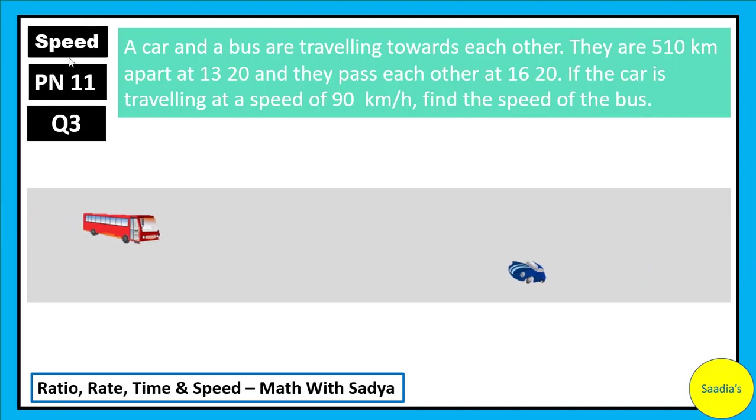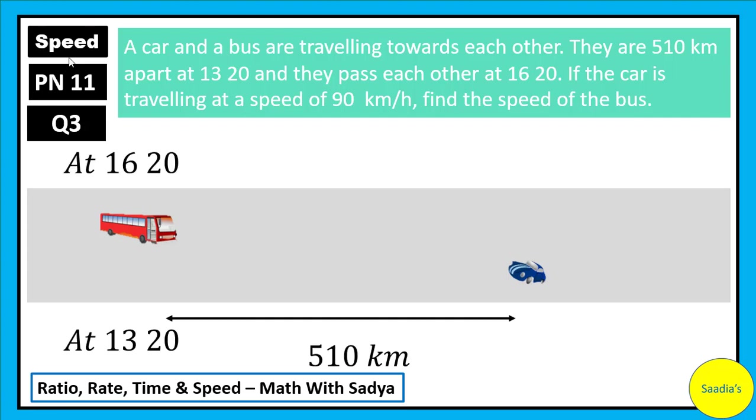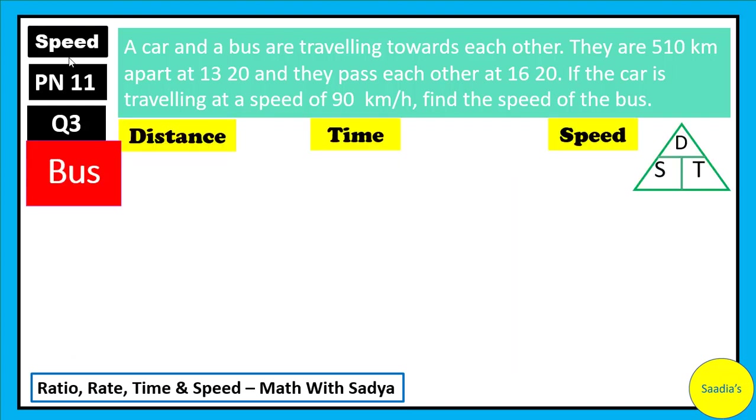The bus and the car are travelling towards each other. At 1320, they are 510 km apart. And at 1620, the car has travelled 270 km, and they reach a point where they both pass each other. How much has the bus covered? Definitely, 510 minus 270 km. Now let's look at the details for the bus. We can see that the bus has travelled a distance of 510 minus 270 km which is 240 km.